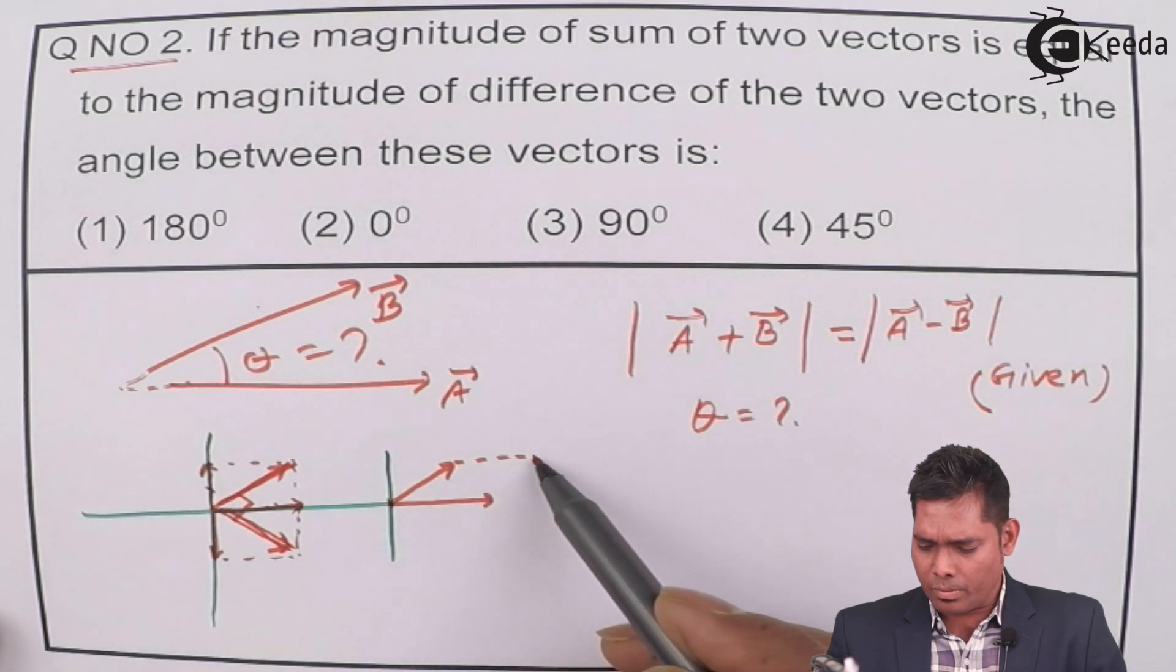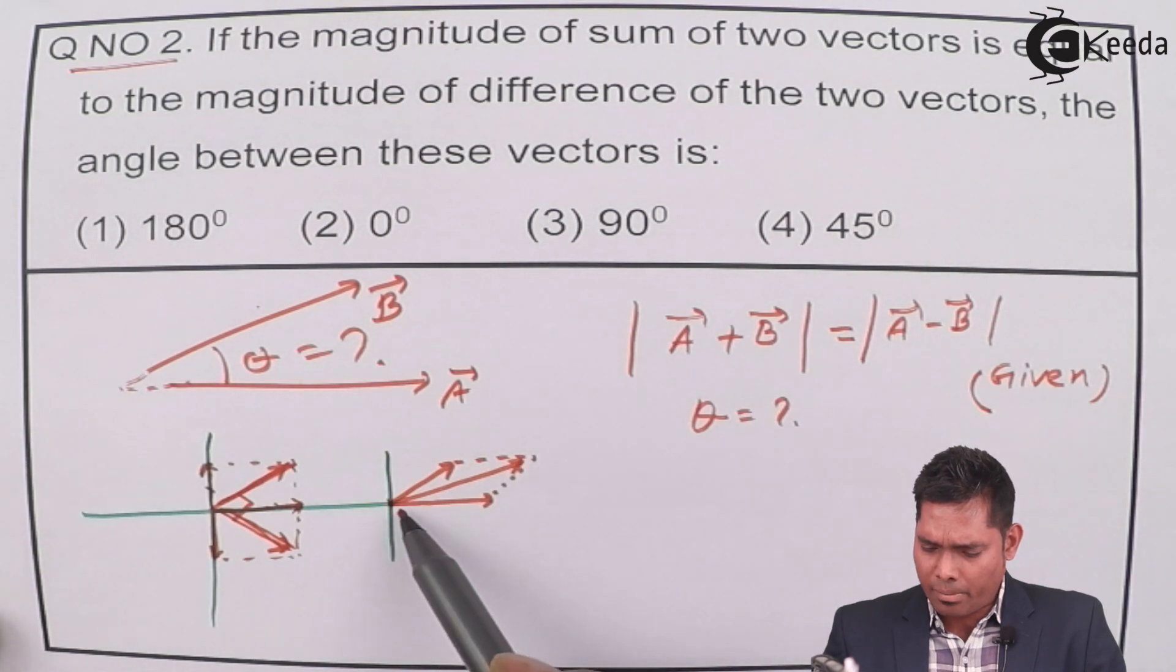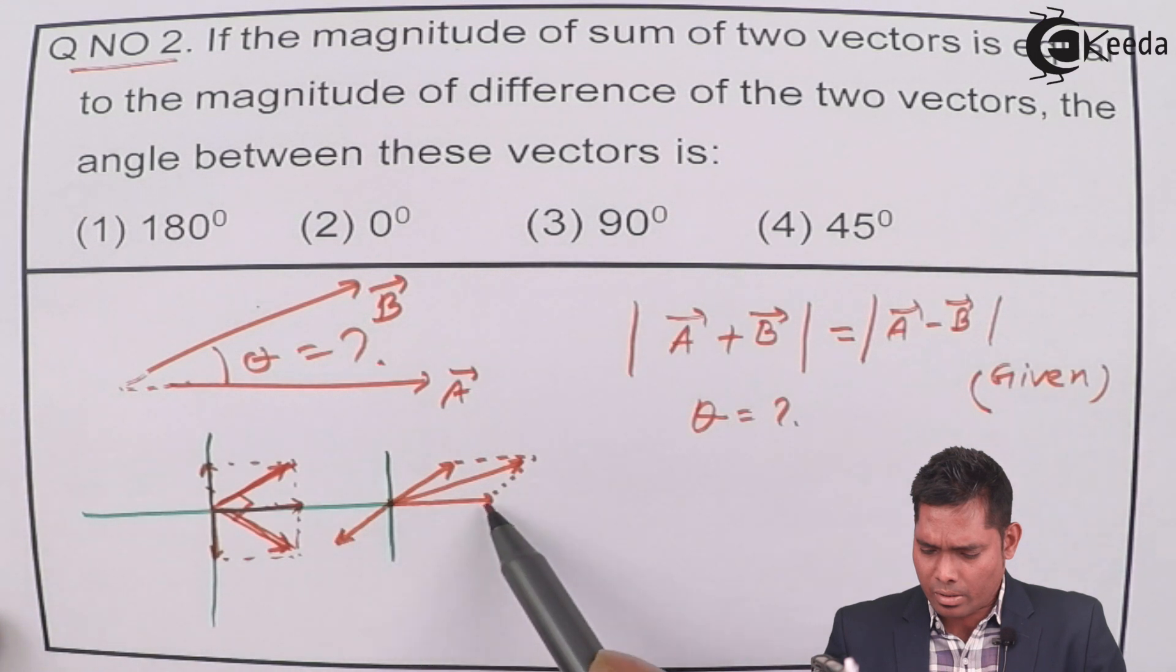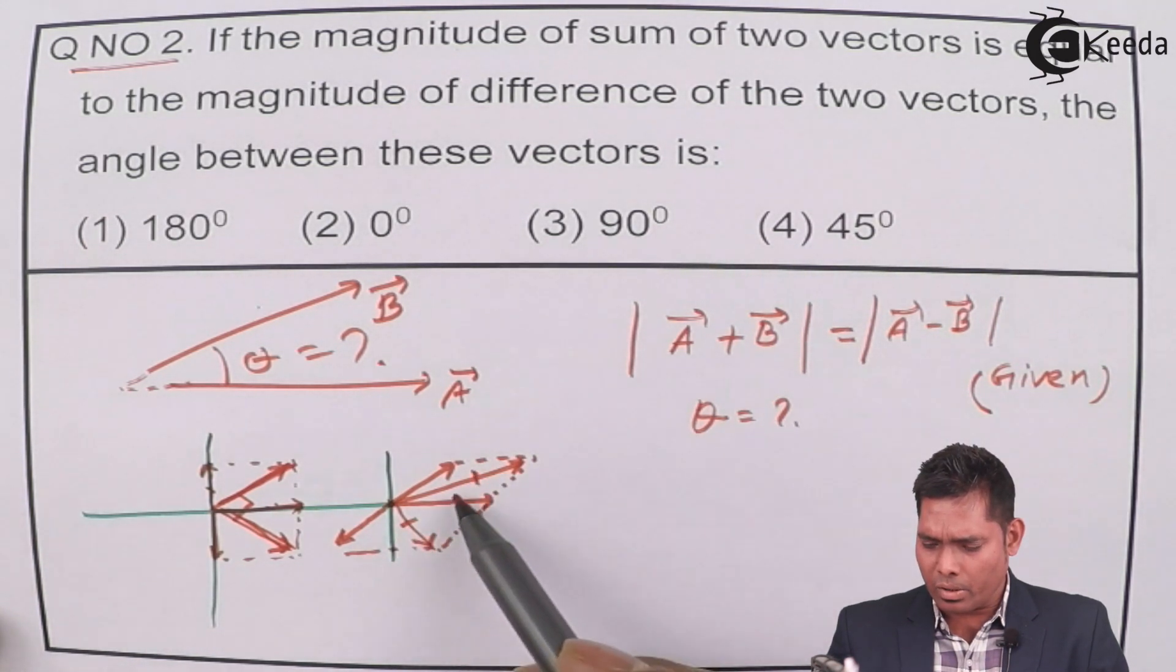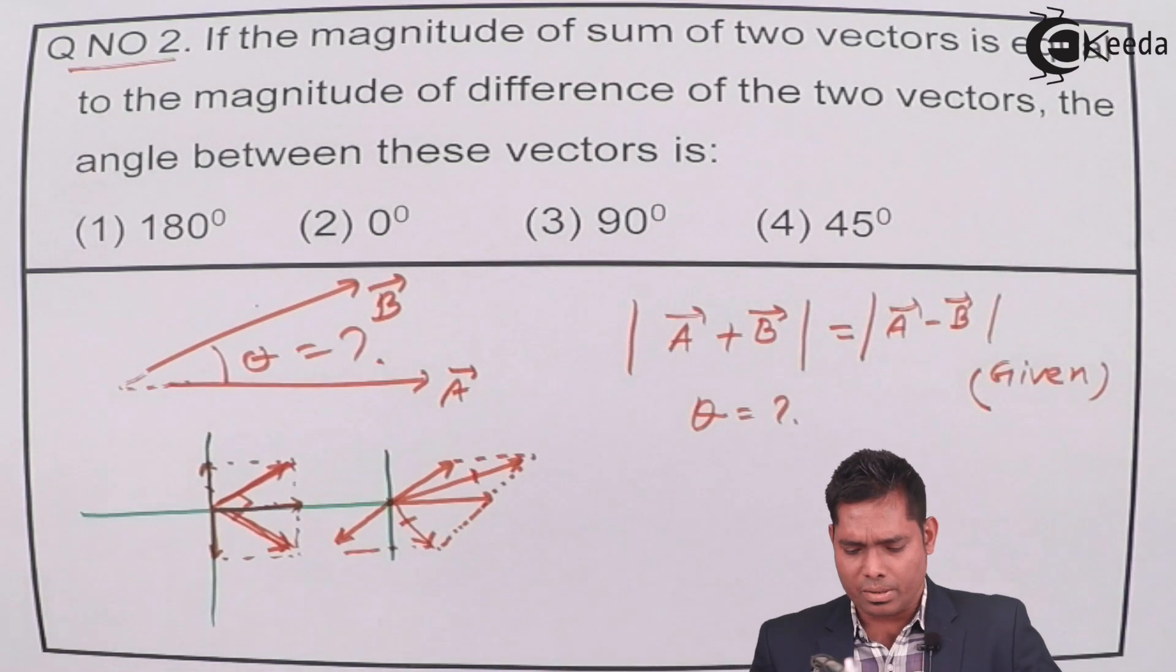then A plus B will be something like that. And A minus B, you can see here, this is the minus B vector, then it will be something like that. So you can clearly see that they're not equal. So this condition is never going to satisfy.